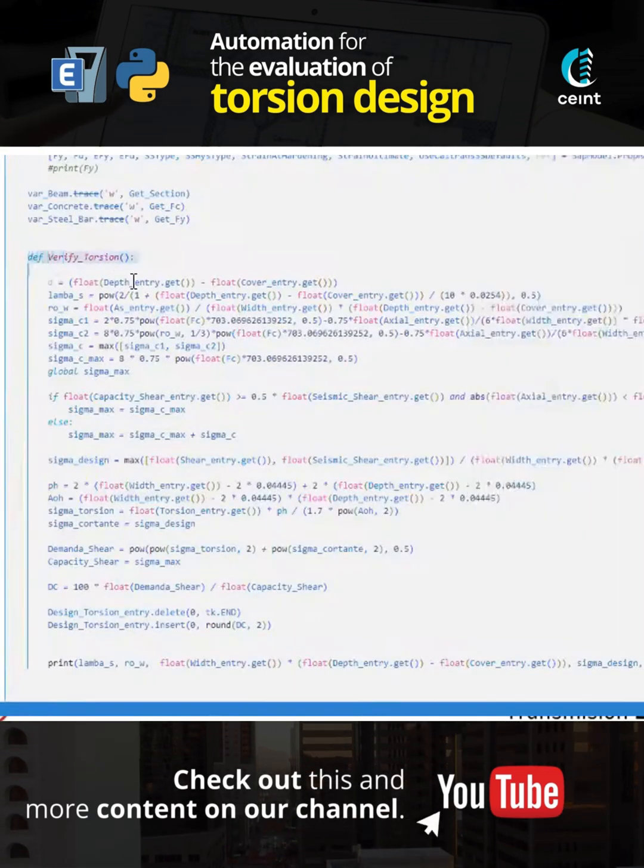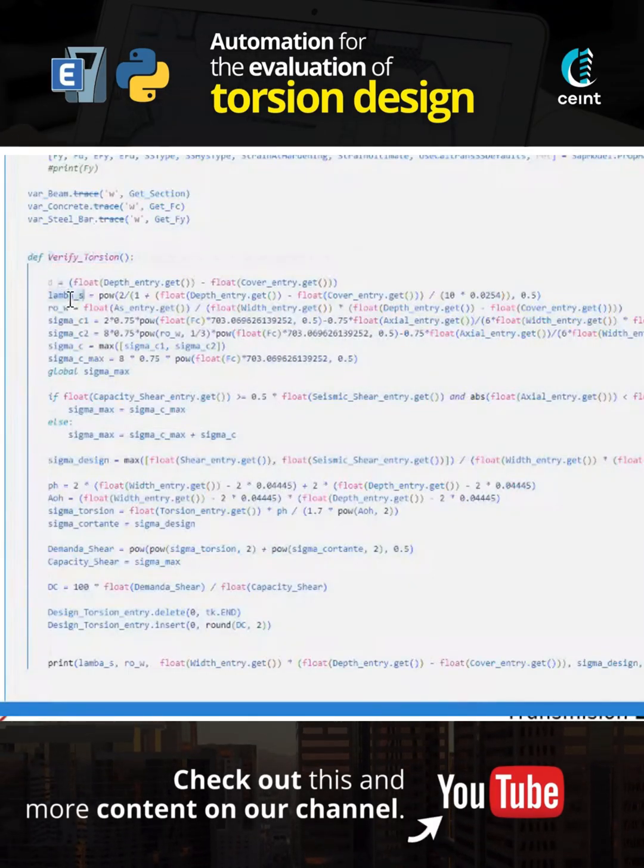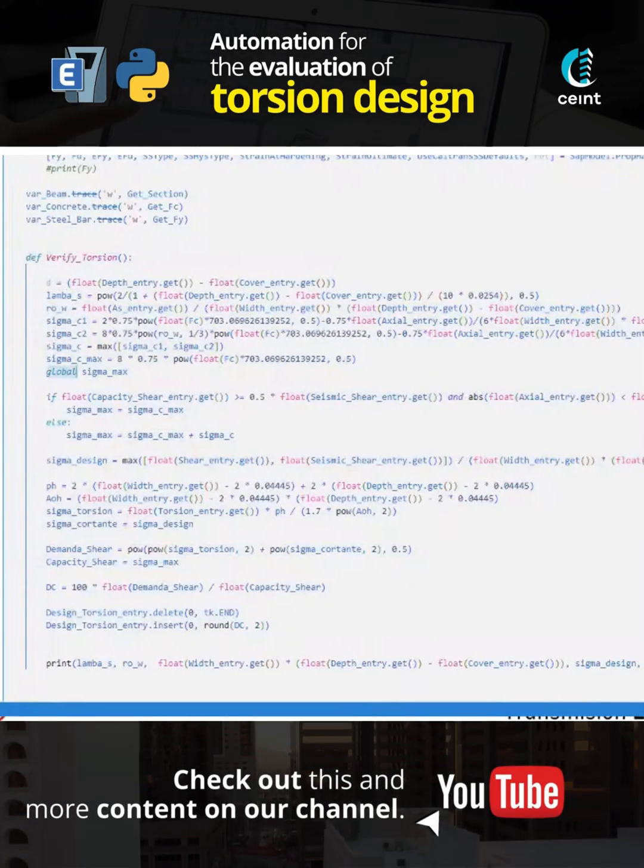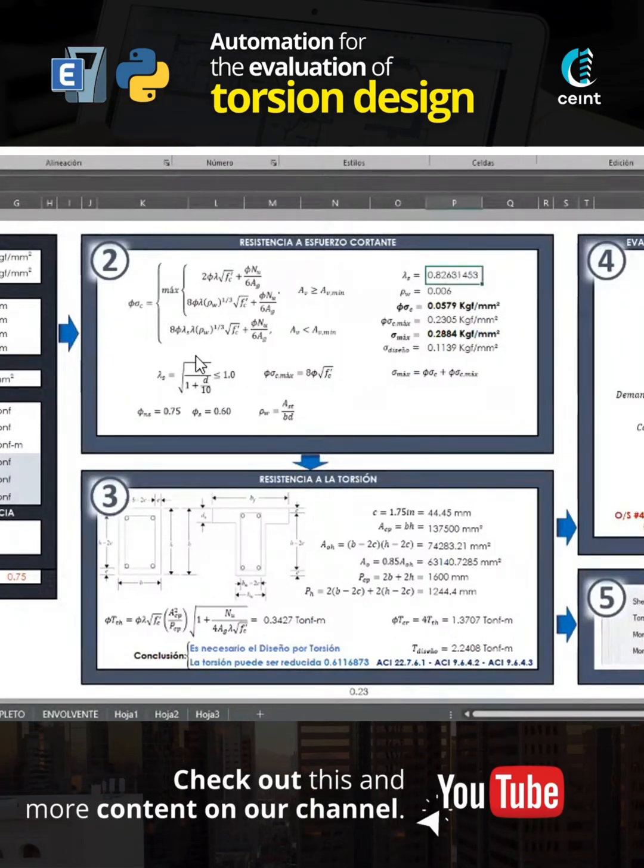And here, as you can see, I have another function that allows me to do all the evaluation whether or not it is necessary to include the torsion, where I start to do my calculations. These are associated with what I have here. For example, that value of lambda that you see there, I'm calculating lambda_s.